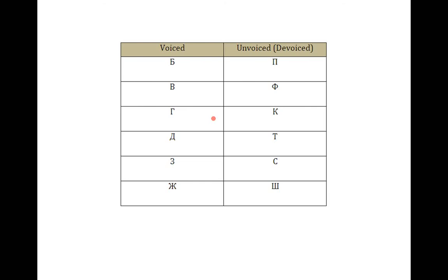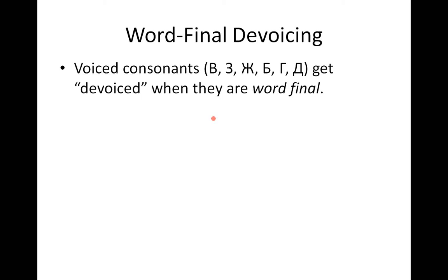So the first rule that we have to be aware of that pertains to voiced and unvoiced consonants is the rule called word final devoicing. You're familiar with this when you hear Russian speakers who still have a Russian accent speaking English, and they'll say things like buck instead of bug, or they'll say mop instead of mob. That's because Russian has a rule which states that all voiced consonants at the end of a word are devoiced. Voiced consonants - V, Z, Ж, B, G, D - get devoiced when they are word final. In other words, the voiced consonant gets devoiced to its unvoiced pair.